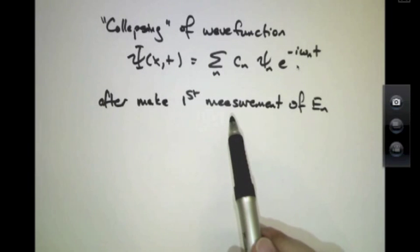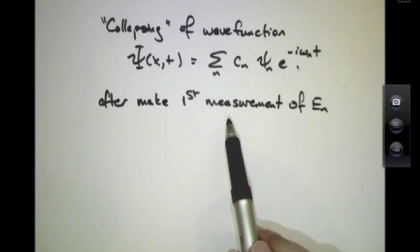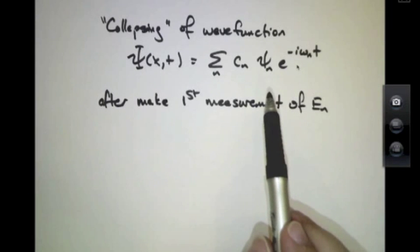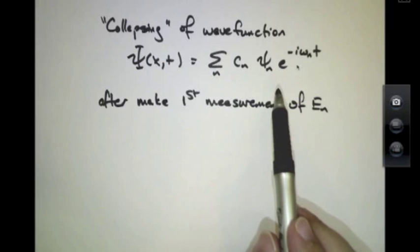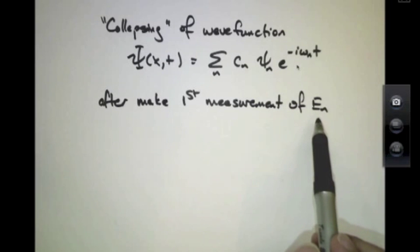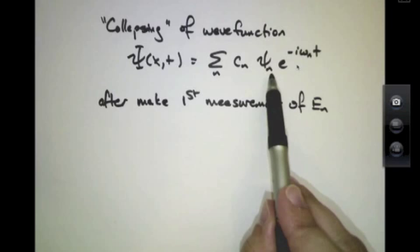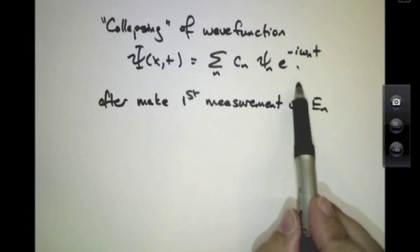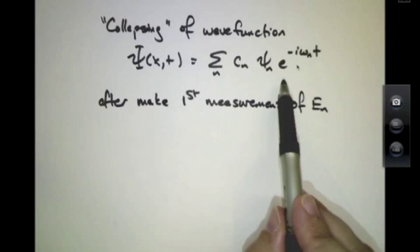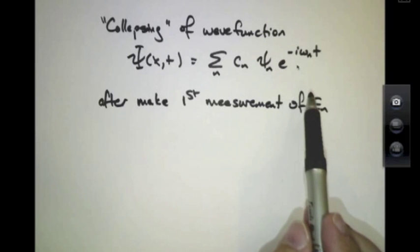So that if I were to keep working at this same particle over and over again, what would I see? Well, the second time I try to measure its energy, I would still get back the same value e n with 100% probability. If I measured a third time, again, with 100% probability, I get the same value e n. That's because I've already determined which of these particular eigenvalues within this cocktail that this particle happened to be in.